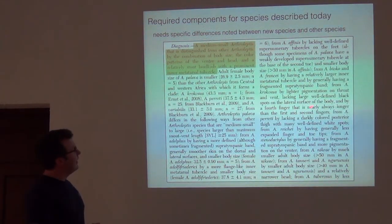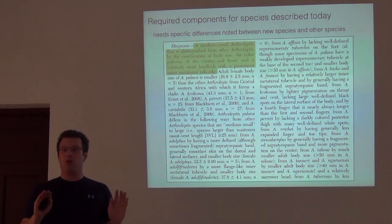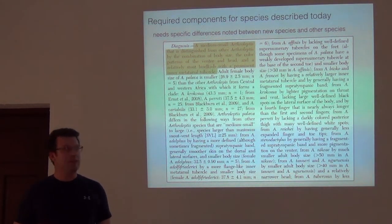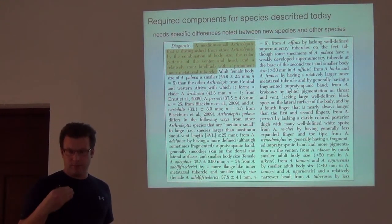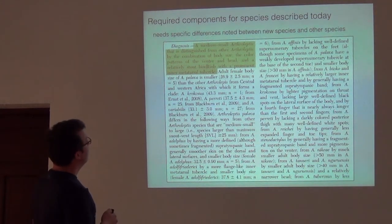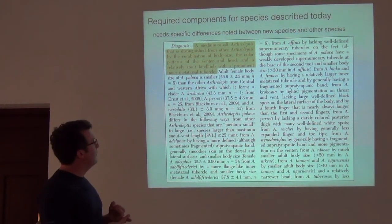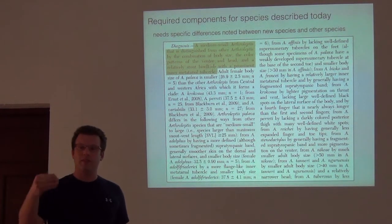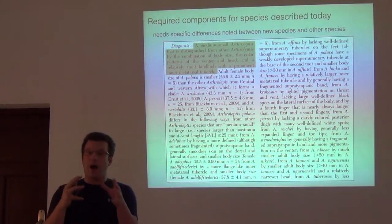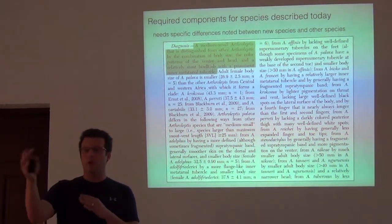The last important piece is the diagnosis — this is where I say how it's different from other species. Here in the paper it's called out explicitly as 'diagnosis.' I'll get to the rest of this in a few minutes, but this part satisfies the criteria by the code to make it available. This is a medium-small Arthroleptus distinguished from other Arthroleptus by the combination of body size, color patterns of the venter, the ventral side and the head, and a relatively stout hind limb and a prominent inner metatarsal tubercle.